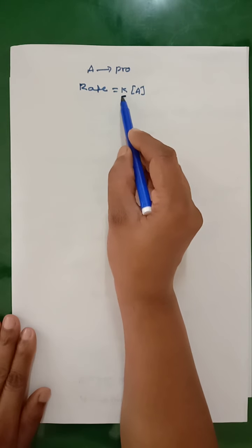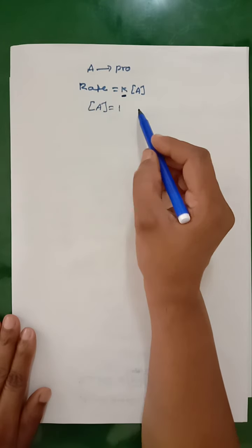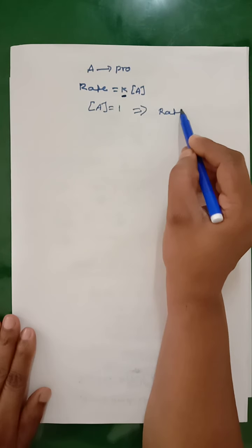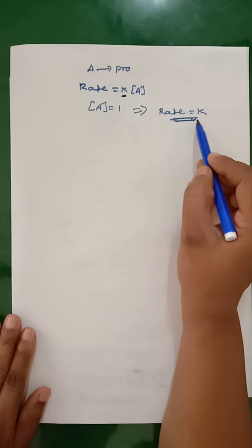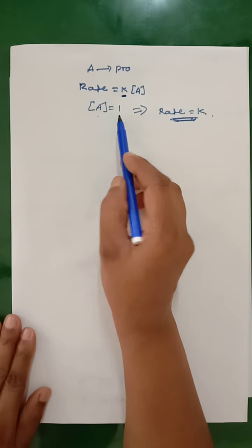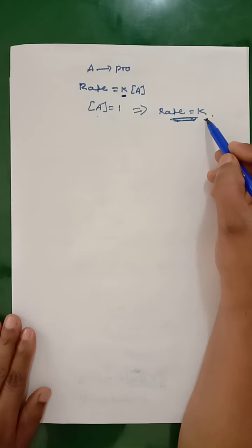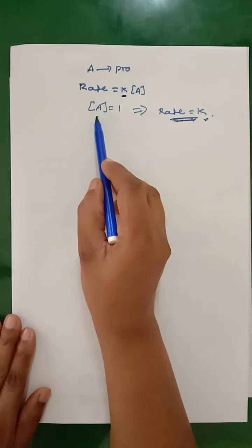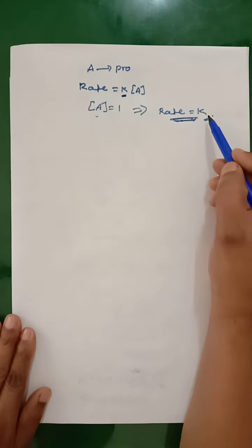To define the rate constant, we will consider the concentration of the reactant as 1. If the concentration of the reactants becomes equal to 1, then the rate of reaction will be equal to the rate constant. So, rate constant can be defined as the rate of reaction when the concentration of reactant becomes unity or 1.